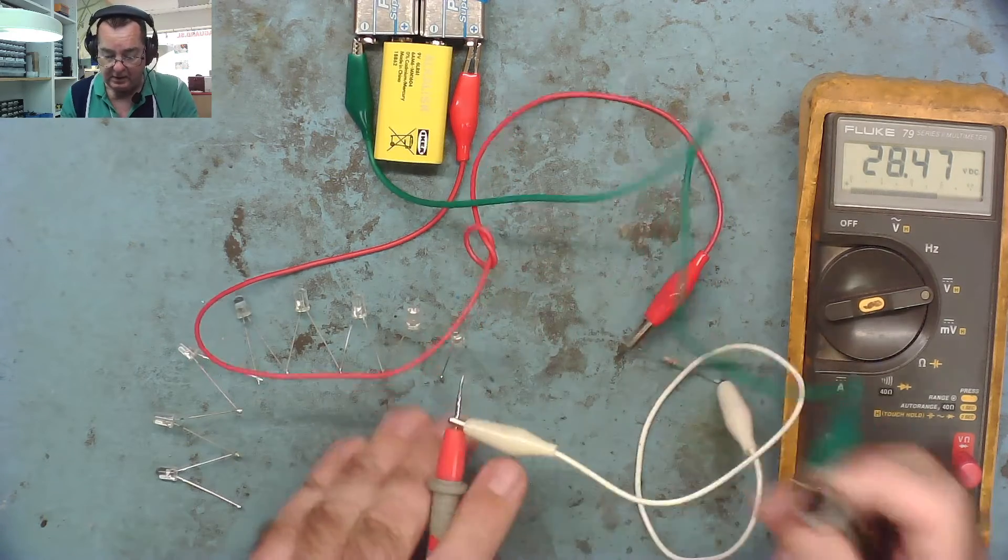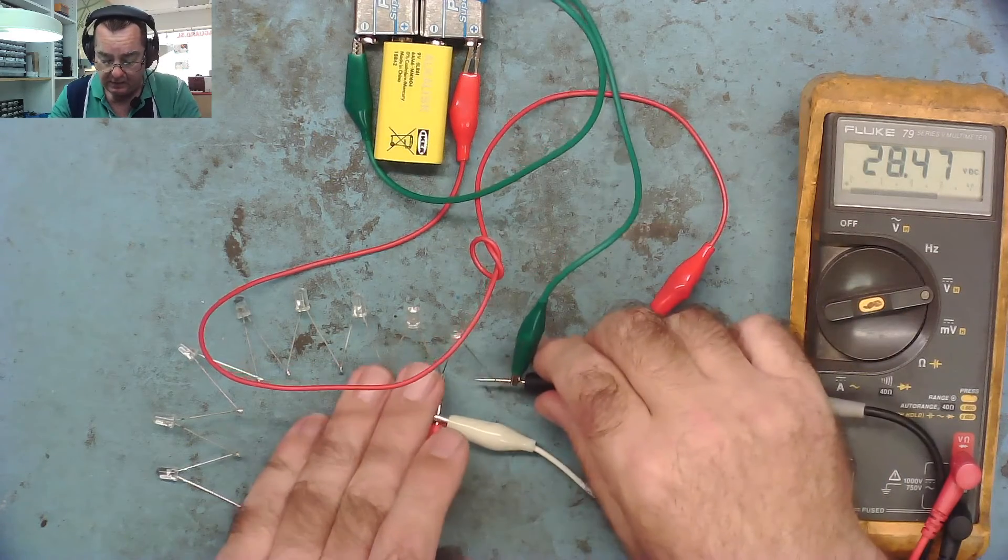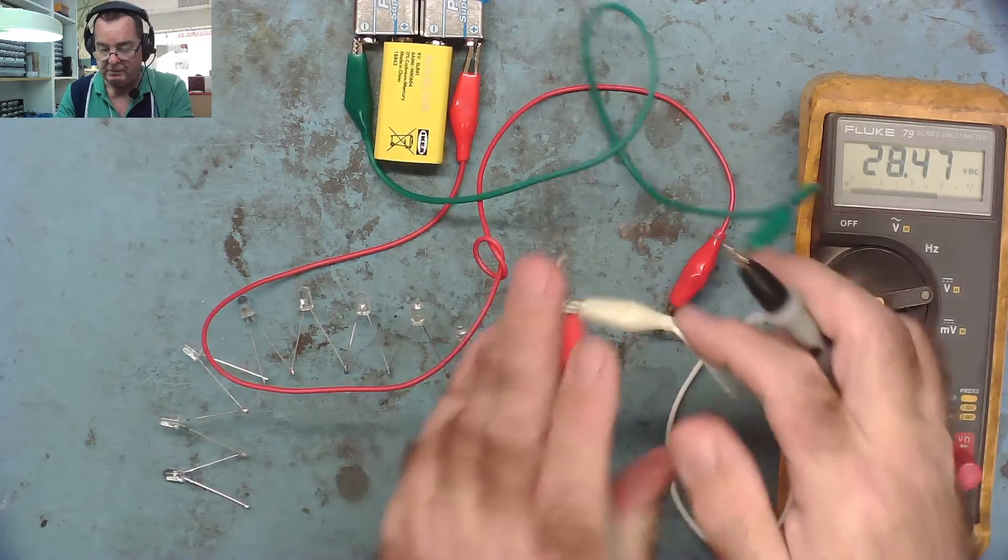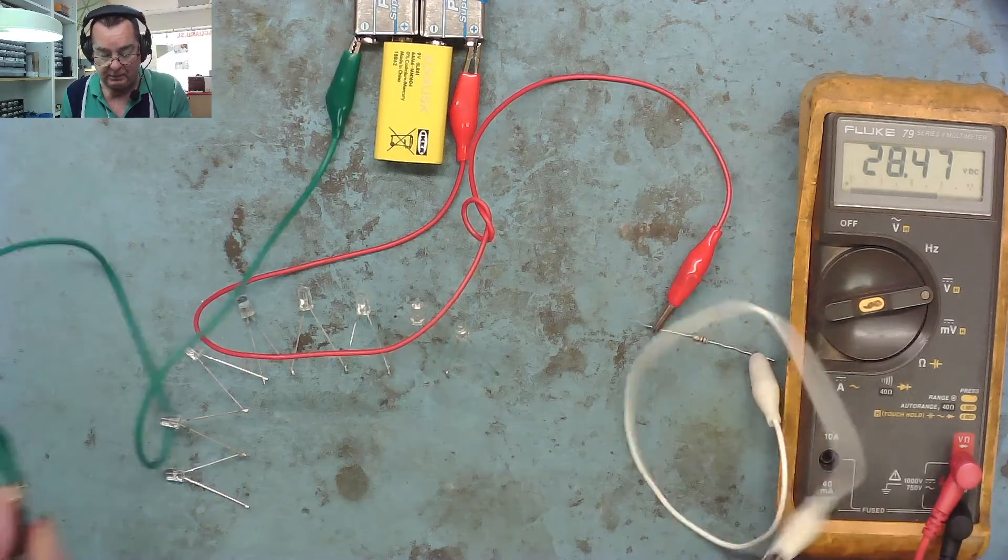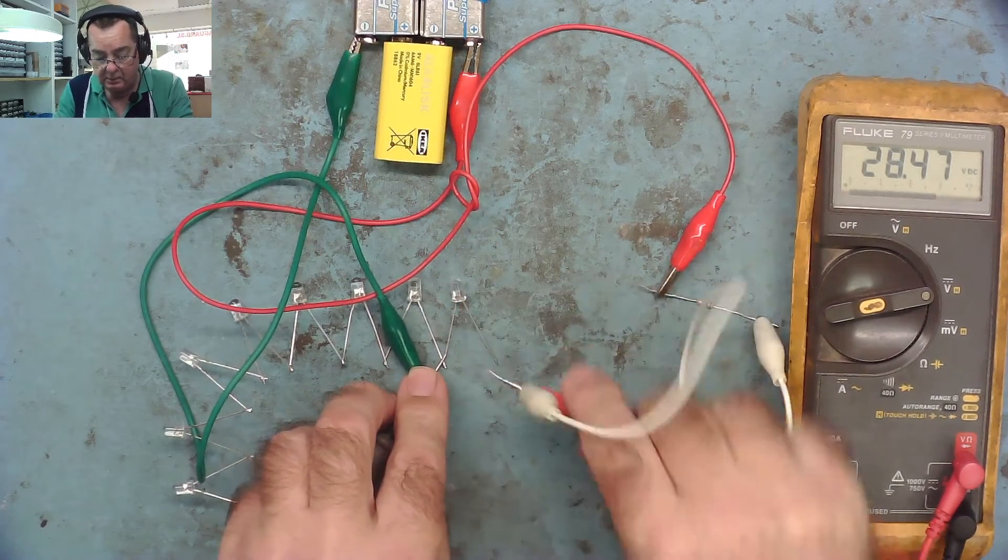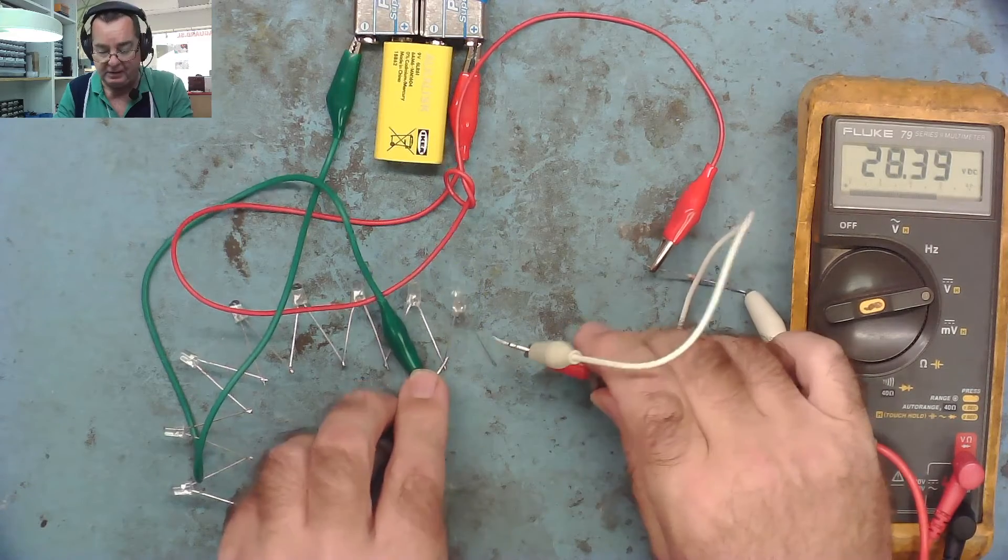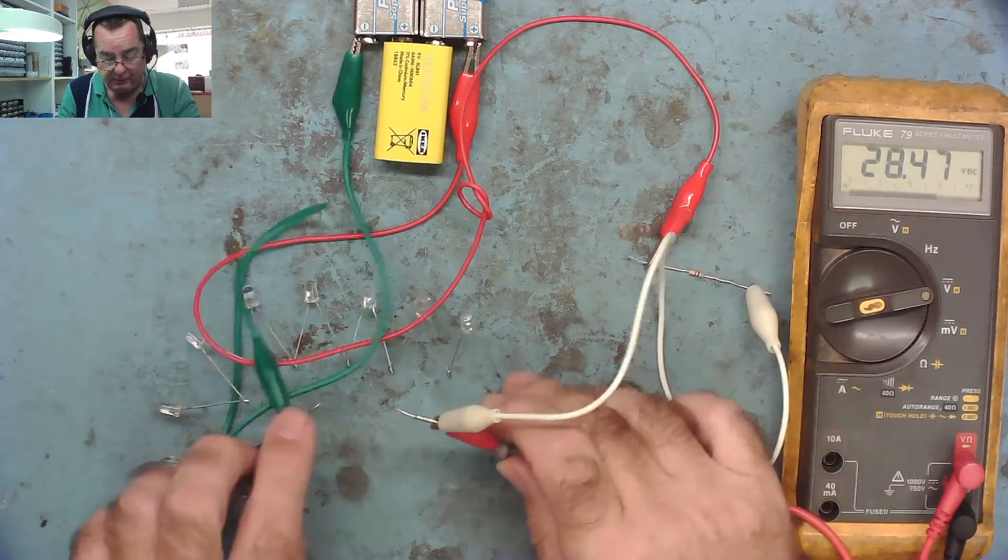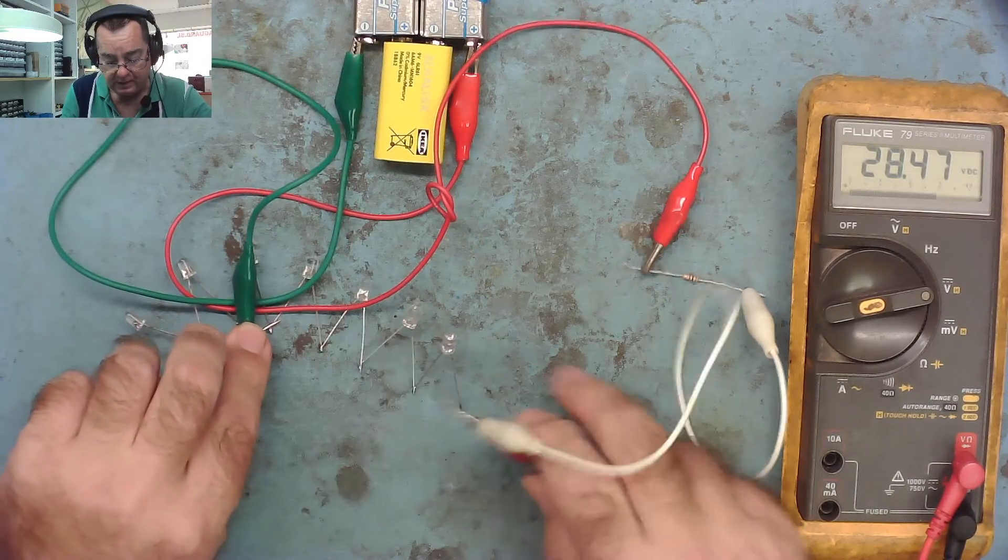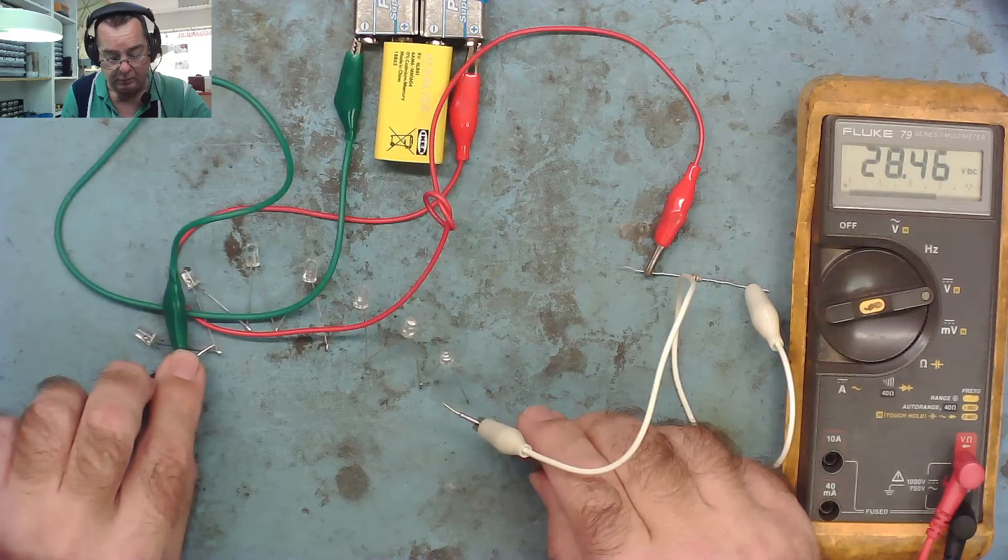In this case, let's go to the first LED in the string. Nothing's happening, so the chances are it's either a faulty LED or we have the wires the wrong way round. Let's go the other way - that LED flashes, that's a good one. Let's go further down the string. We'll do the first four together - they're all good.